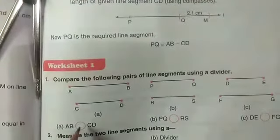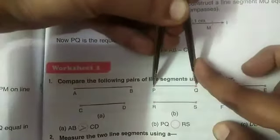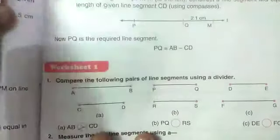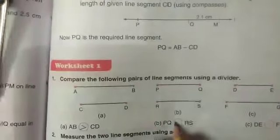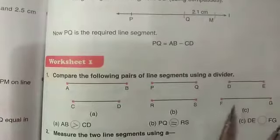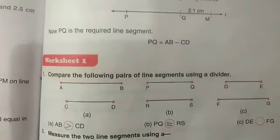Now I will keep like this. Clearly we can see AB is greater than CD, so we will mark the sign of greater here. Now PQ, open the divider like this and measure the segment RS. Now both are same, so mark the sign of equal here. Now C part you will do yourself.